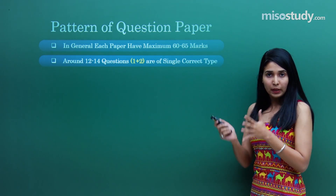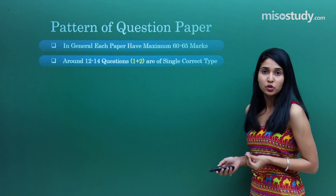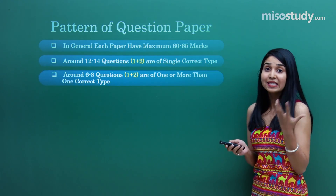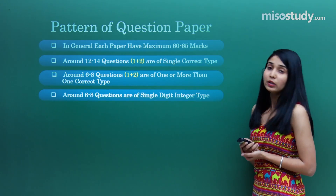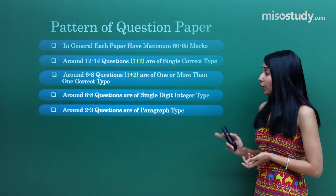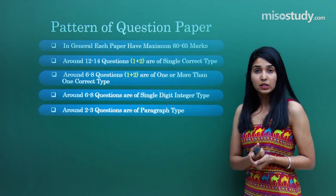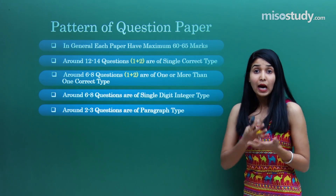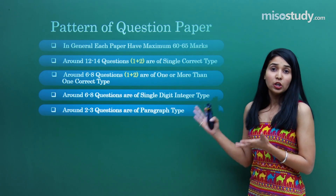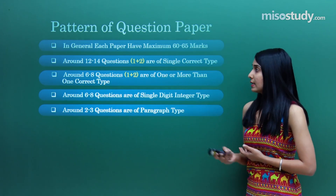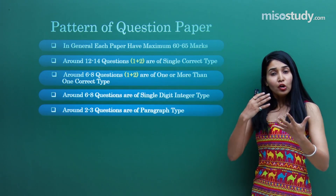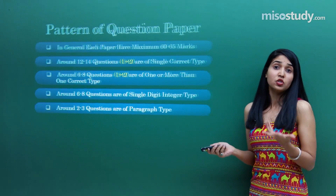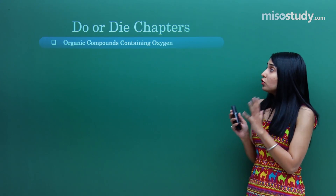If I talk about the pattern of the question paper — approximately both papers together have sometimes 60 questions, sometimes 58, sometimes 65. We have single-choice questions, multiple correct answer questions, integer-type questions, paragraph-type questions, and sometimes match-the-column. It totally depends on the distribution. Regarding negative marking, only single-digit integer questions do not have negative marking, so we need to strategize accordingly and aim for maximum positives.